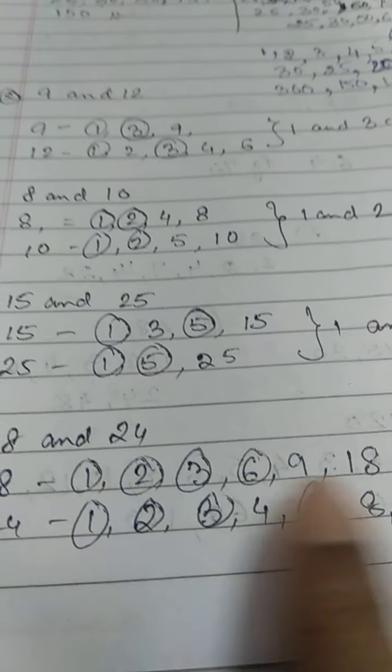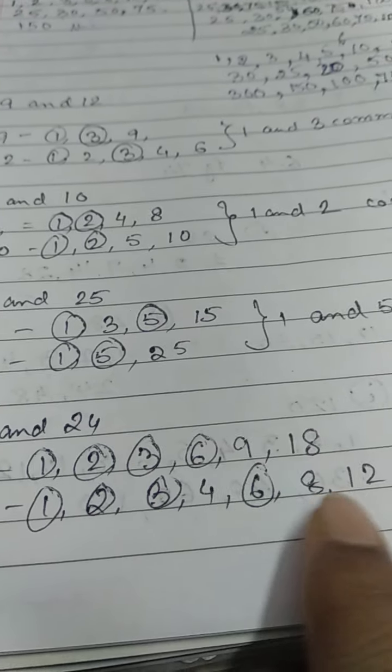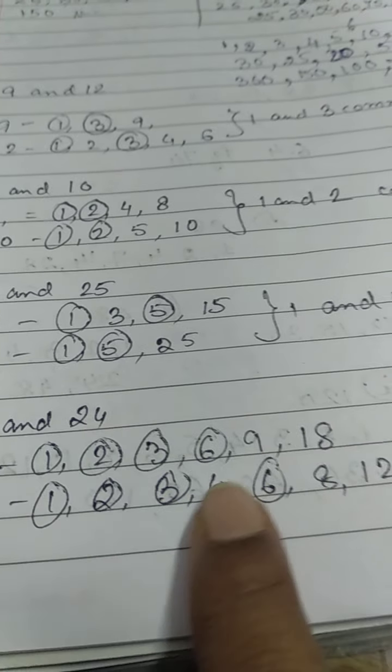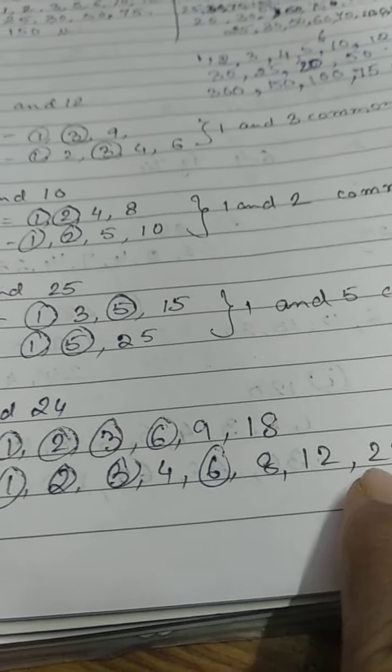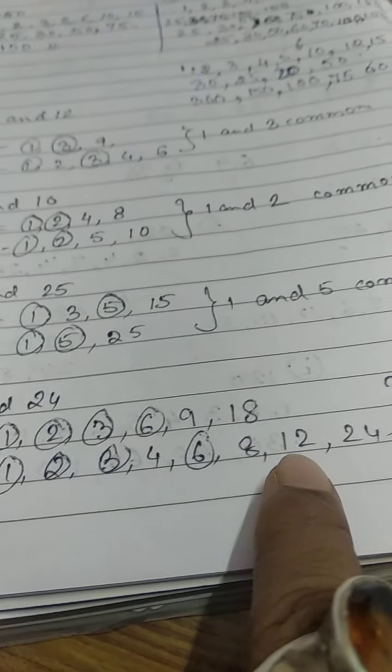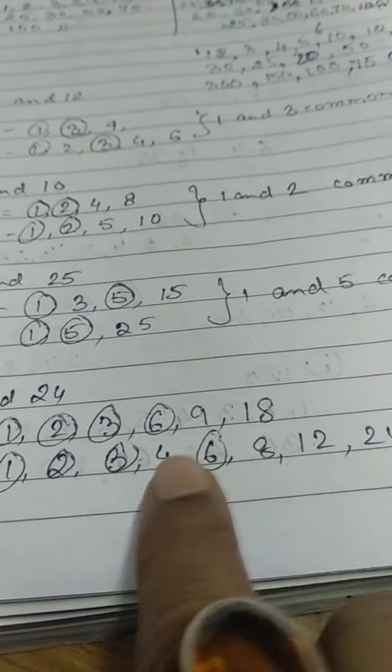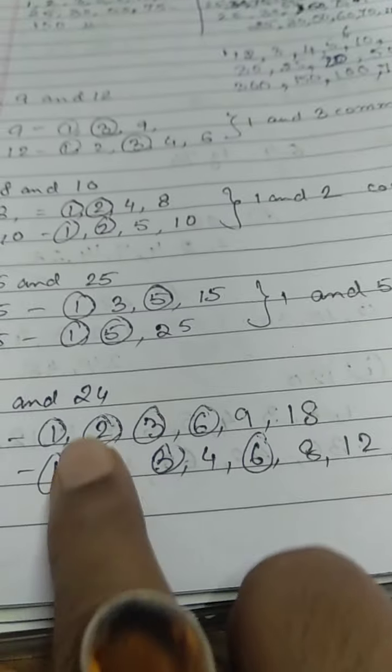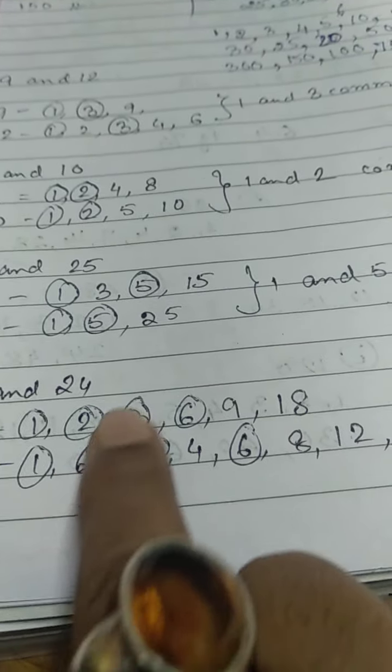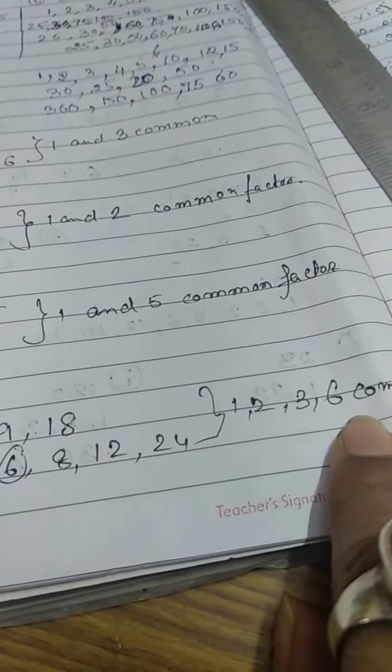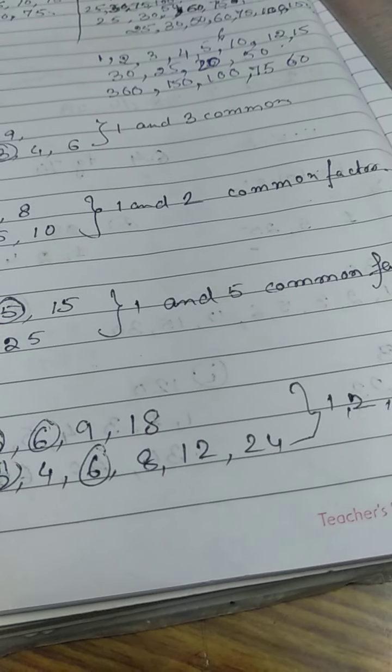For 24: 1 and 24, 2 and 12, 3 and 8, 6 and 4. So common factors are 1, 2, 3, and 6.